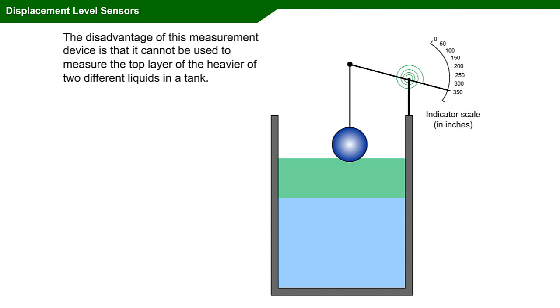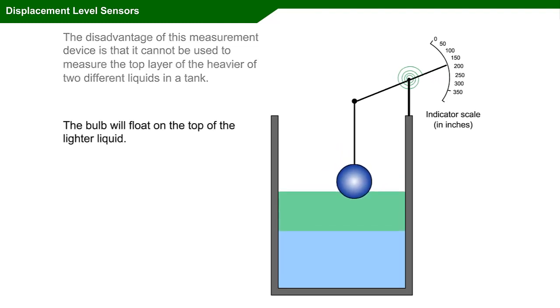The disadvantage of this measurement device is that it cannot be used to measure the top layer of the heavier of two different liquids in a tank. The bulb will float on the top of the lighter liquid.